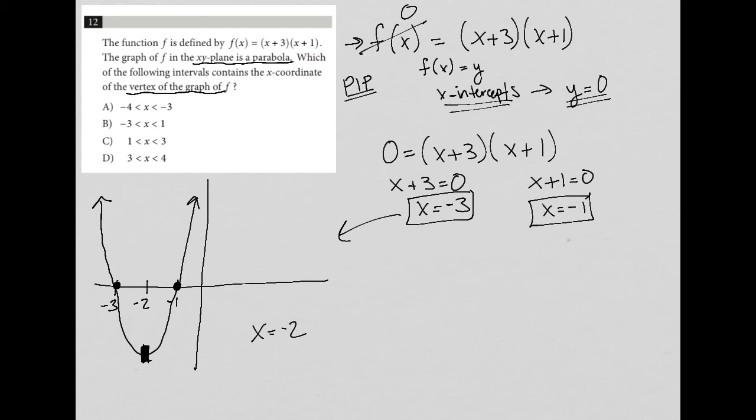Answer choice A says that my interval is x is greater than -4 and less than -3. Another way to read that is x is between -4 and -3. If I were to label this to be -4, x is not between those two values. So A is out.